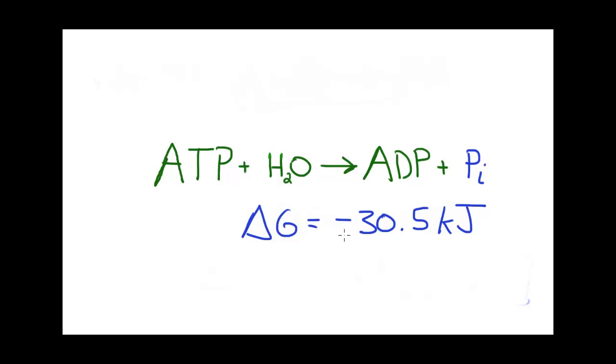One of the ways that organisms couple reactions is in the following way. Imagine, for example, that there was a product that was the result of reacting A plus B that was very important to some biological organism, but that process was thermodynamically unfavored. In other words, the delta G was greater than zero.